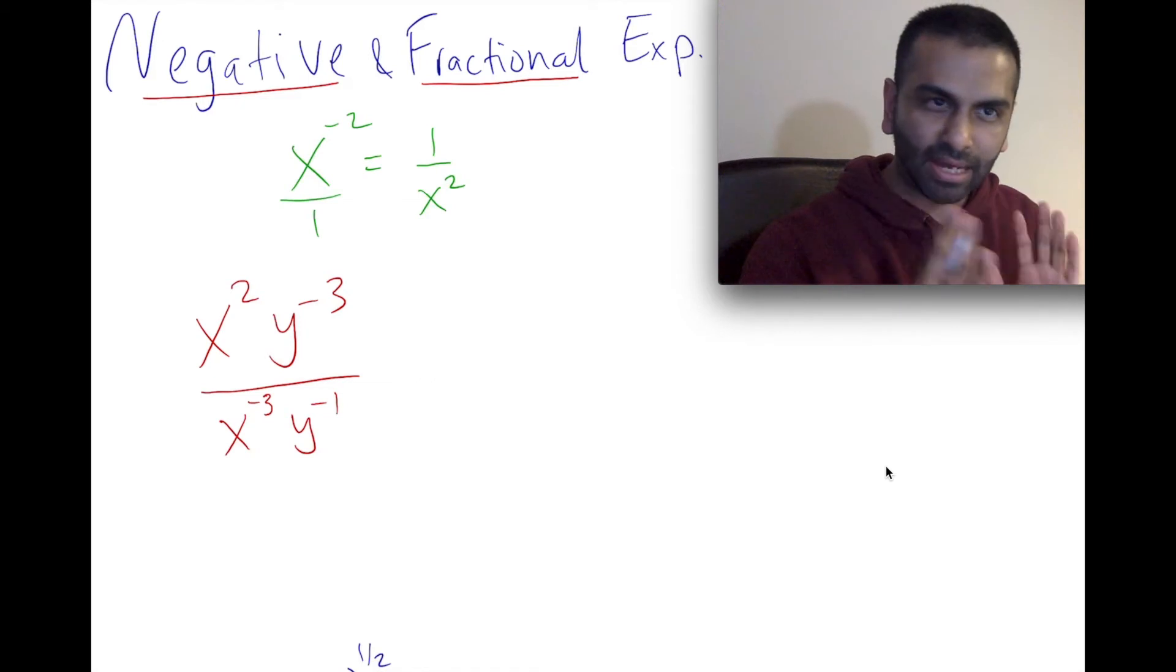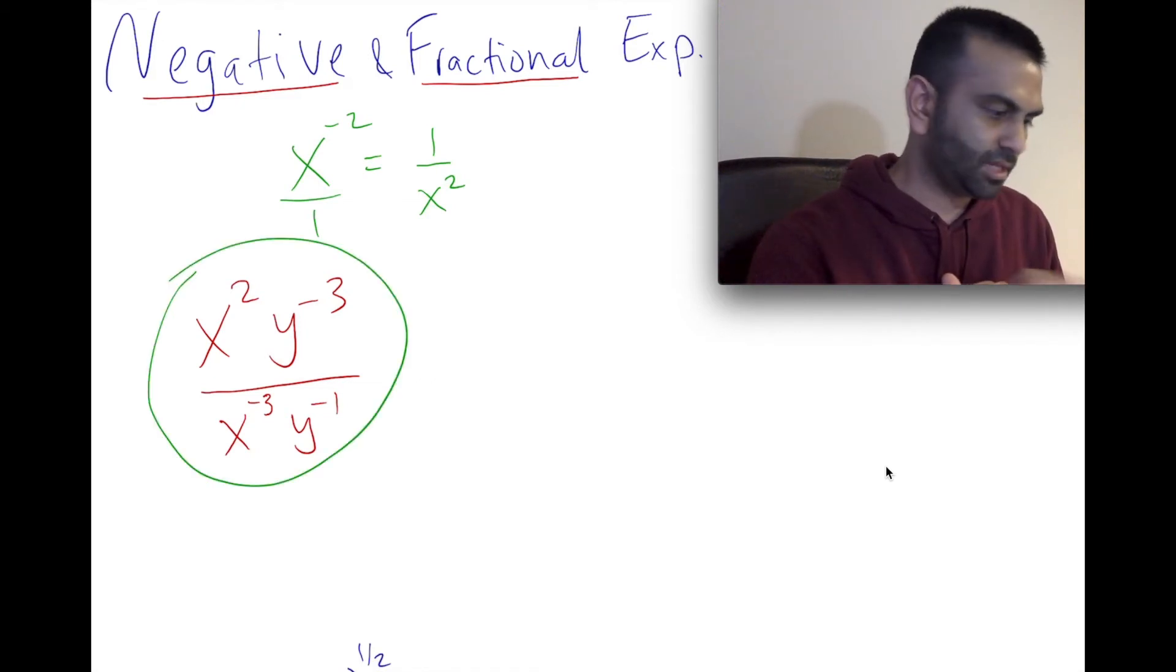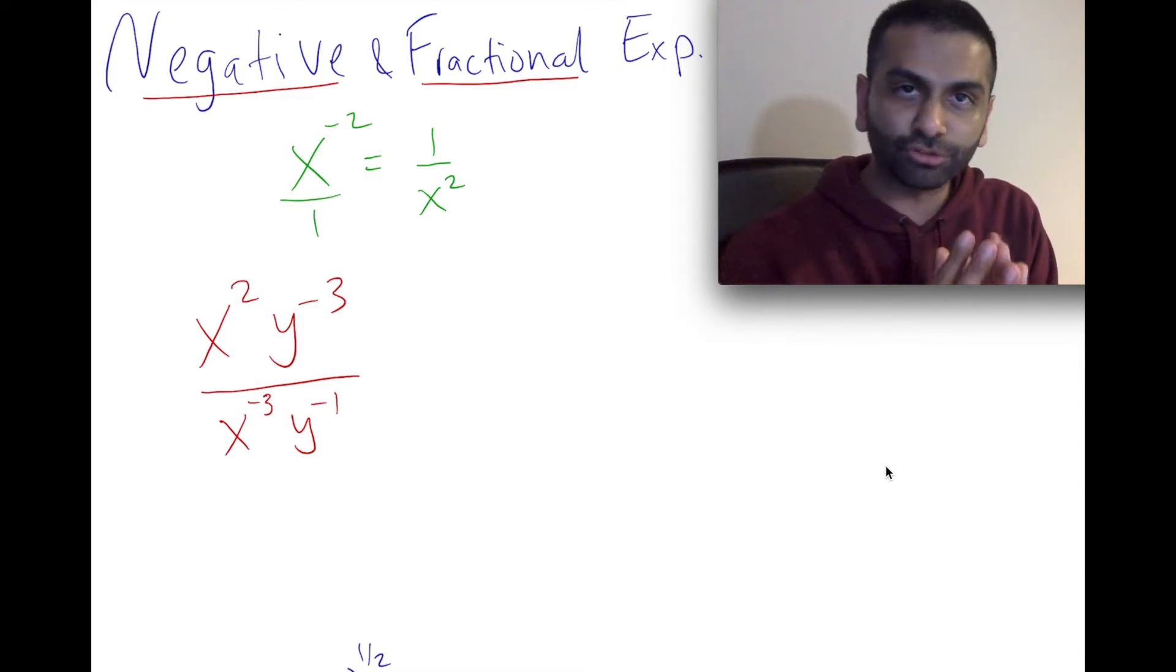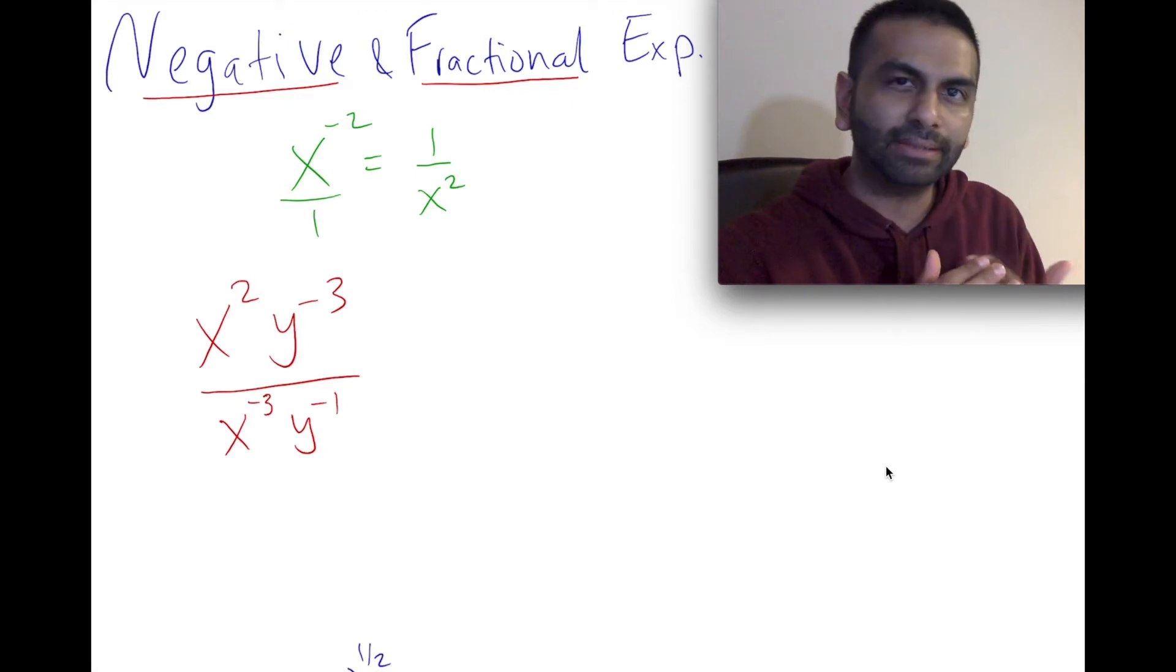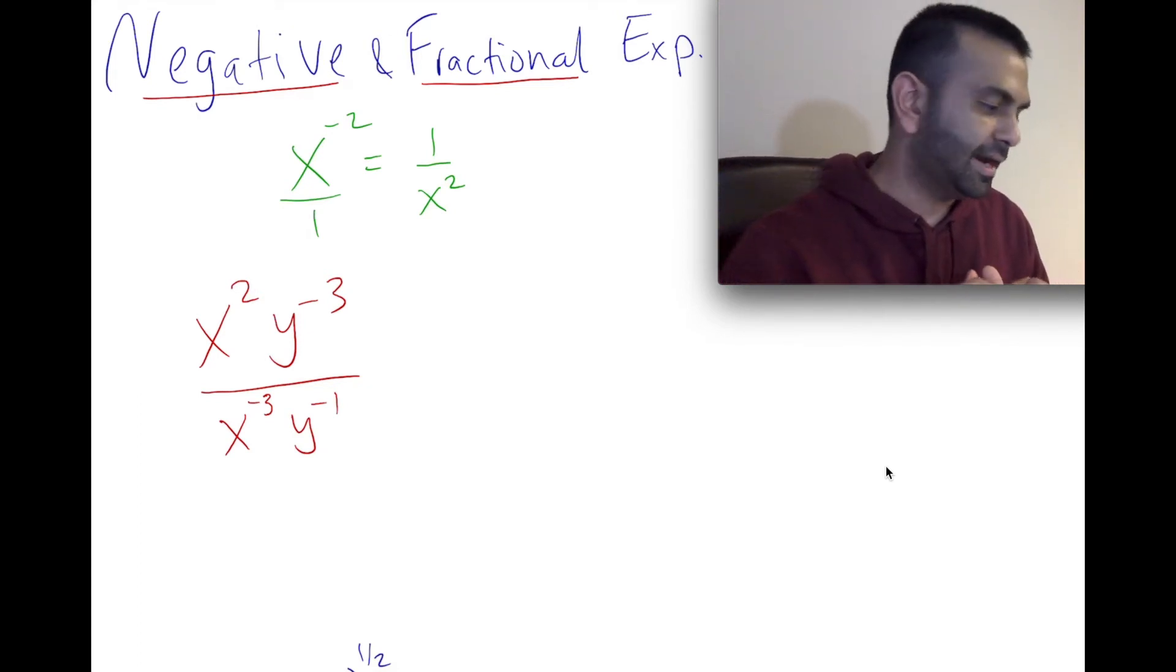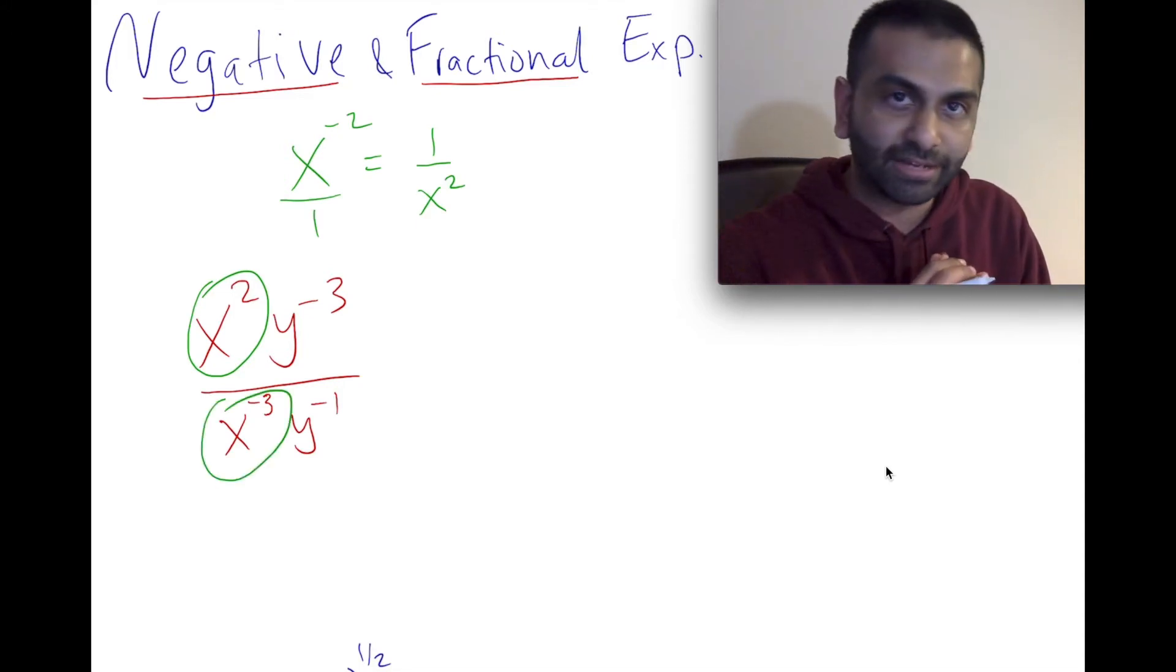Now let's apply that to this problem. Applying that to this, there's a couple of different routes we could go here to simplify this. Usually most questions will ask something like rewrite this without negative exponents. So that's what we're going to do here. We're going to try to rewrite this without any negative exponents. So first thing we could do is let's just simplify it, not worrying about whether exponents are negative or positive. First, let's just look at the x's. There's an x squared here, and there's an x to negative 3 there.